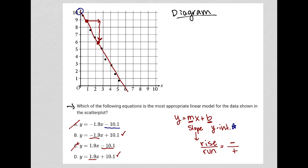In terms of the signs for rise over run, I'd have a negative divided by a positive, which is a negative. So my slope should be negative, and therefore the correct answer here is choice B, because I have a negative slope and that positive 10.1 for the y-intercept.